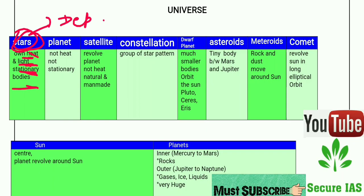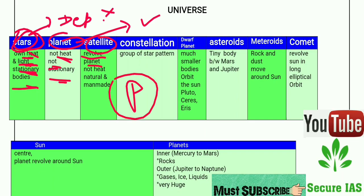Planets do not have their own heat and they are not stationary, so they are dependent on others. Satellites revolve around planets. We have many man-made satellites but only one natural satellite, which is the Moon. So satellites revolve around the planet.